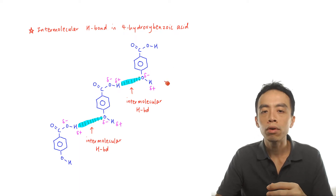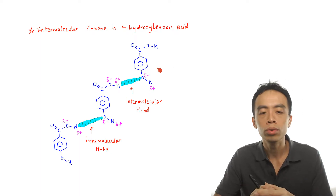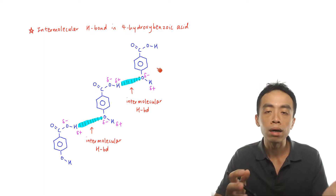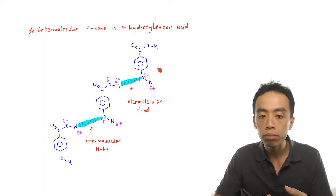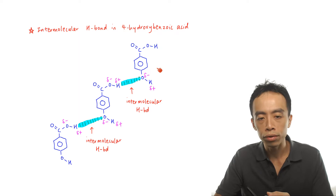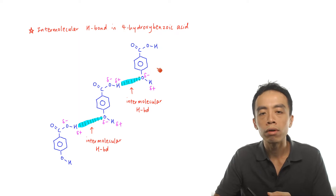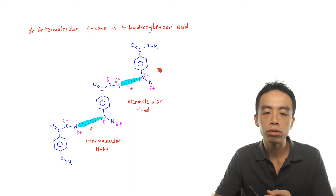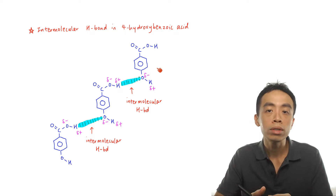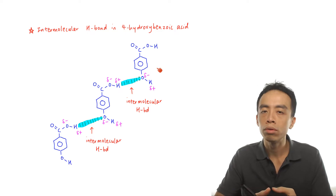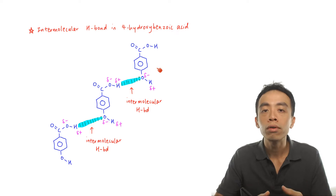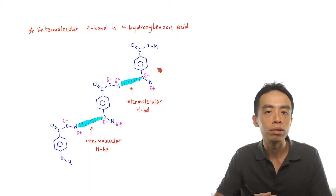So 4-hydroxybenzoic acid can form the maximum amount of intermolecular hydrogen bonds per molecule. The extensiveness of the hydrogen bonding is the most extensive — it can form the most number of hydrogen bonds per molecule — so therefore 4-hydroxybenzoic acid would have a higher melting point.